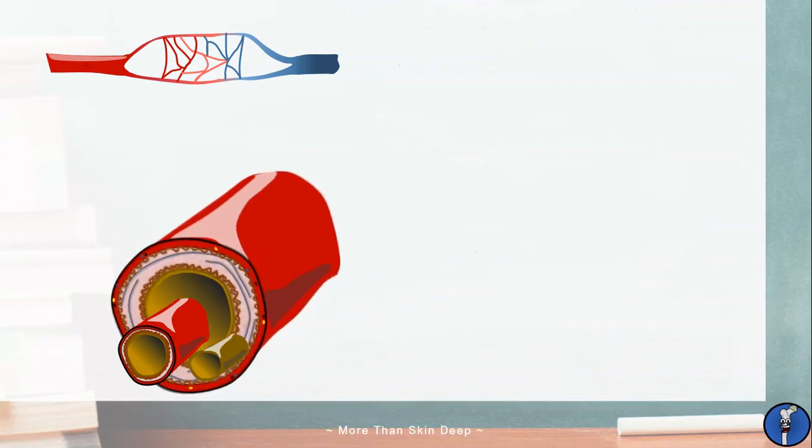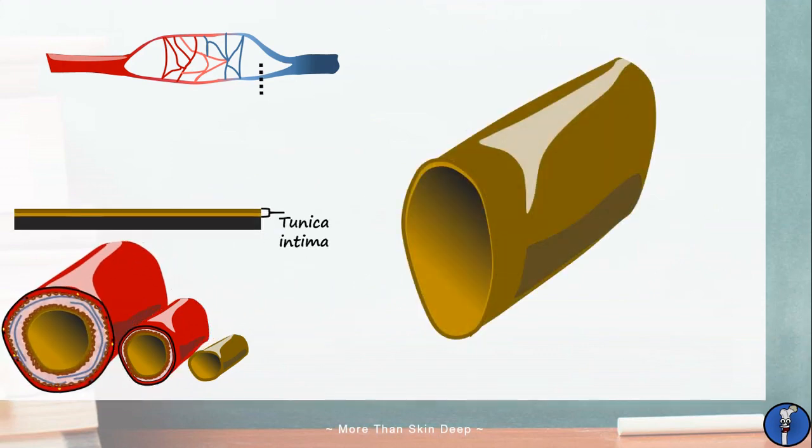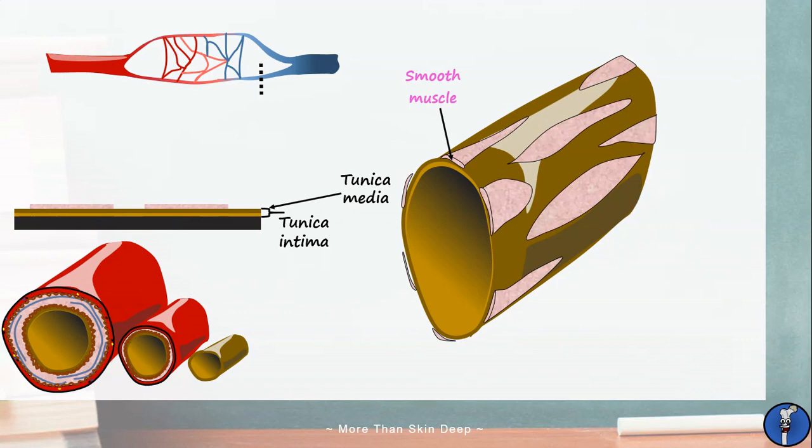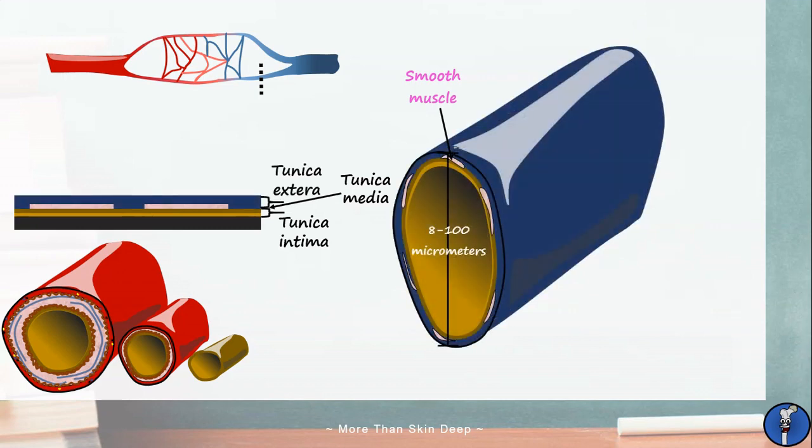Next we'll cover the venules which are fortunately quite simple. They have larger lumens than arterioles but as they are further from the heart the pressures they have to deal with are low. For this reason they have no elastic laminae to facilitate recoil. In fact their tunica media is extremely simple and consists only of a few small muscle cells and the occasional elastic fiber. The tunica externa is also thin and acts simply to hold the whole structure together.